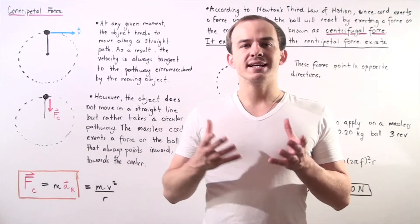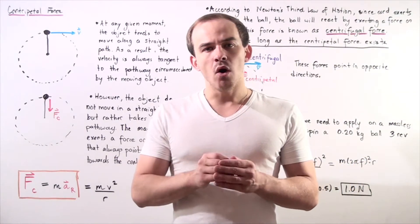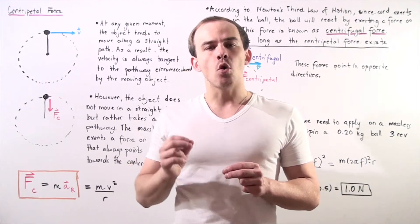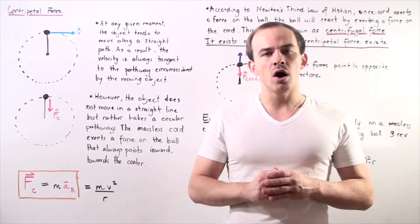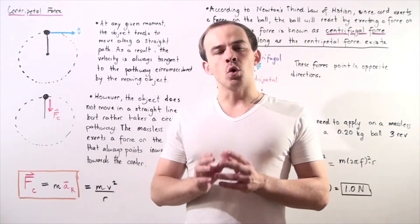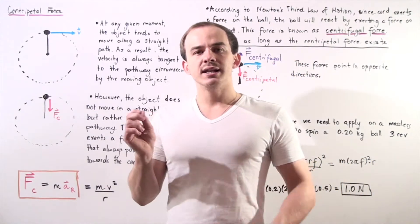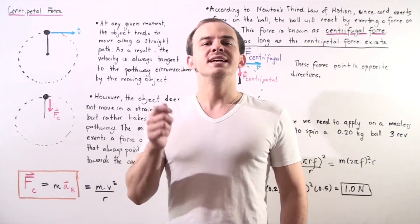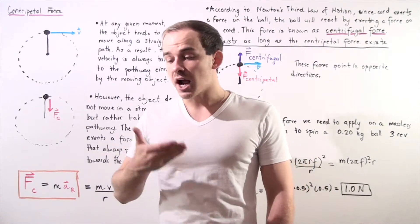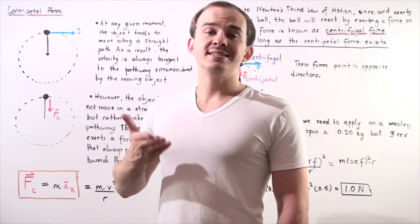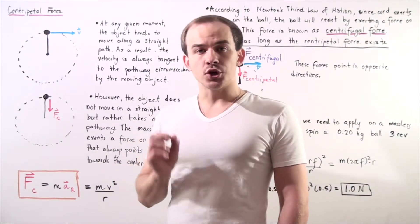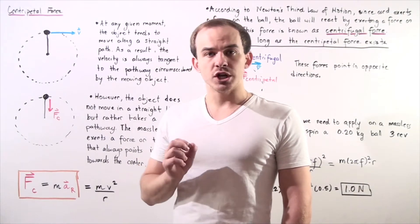Let's suppose we take an object, a ball, and we tie a massless cord to it. We take the massless cord at one end and begin spinning our object, so our ball is undergoing uniform circular motion.